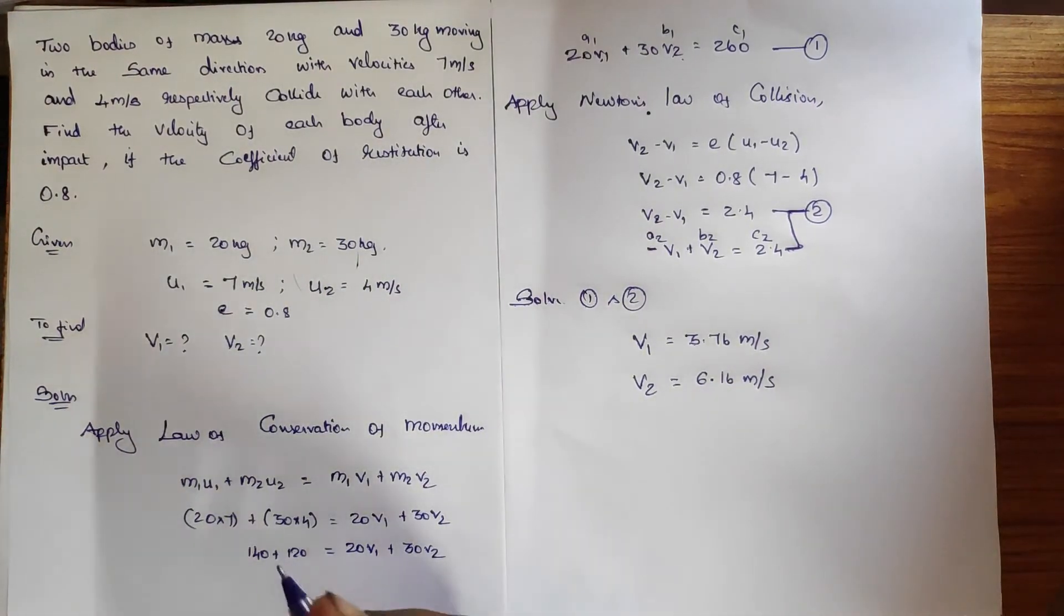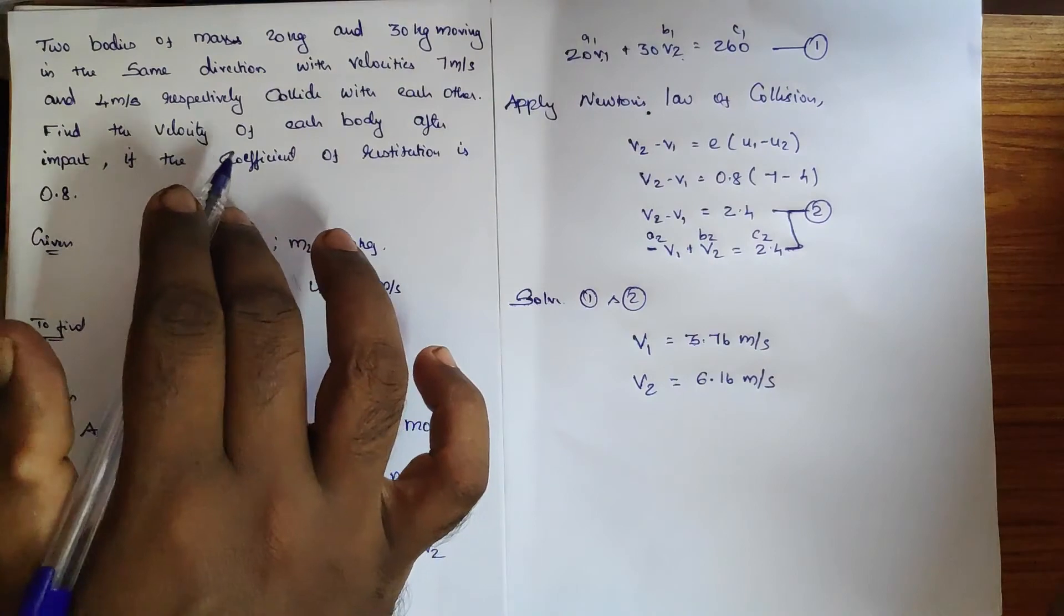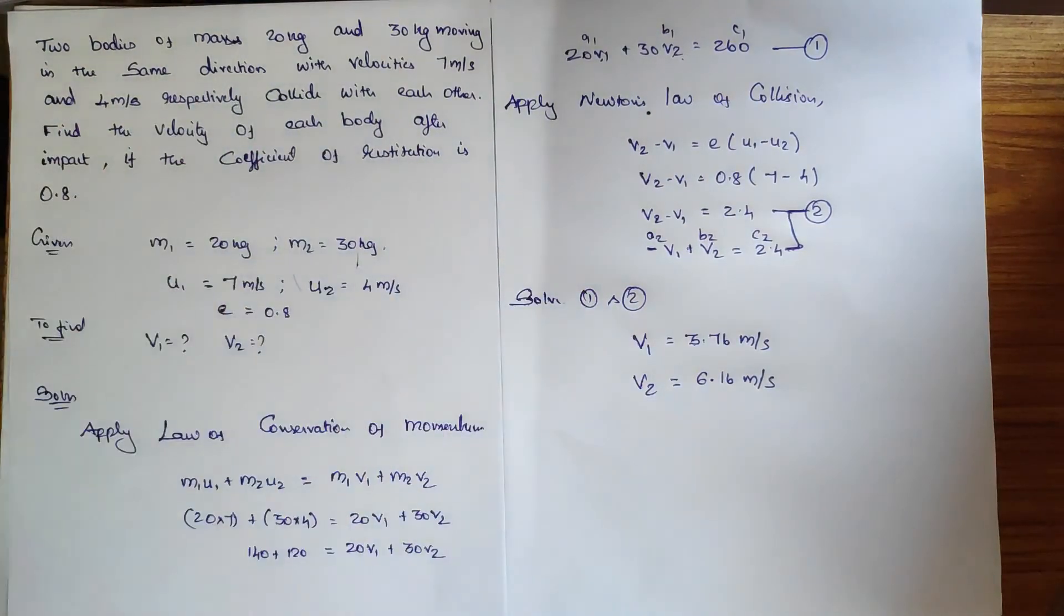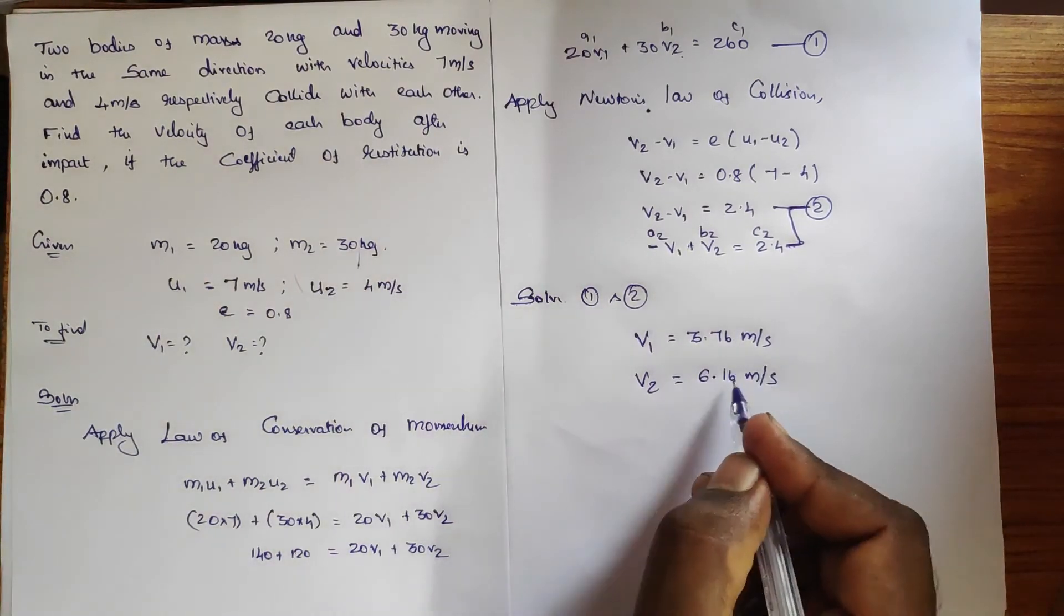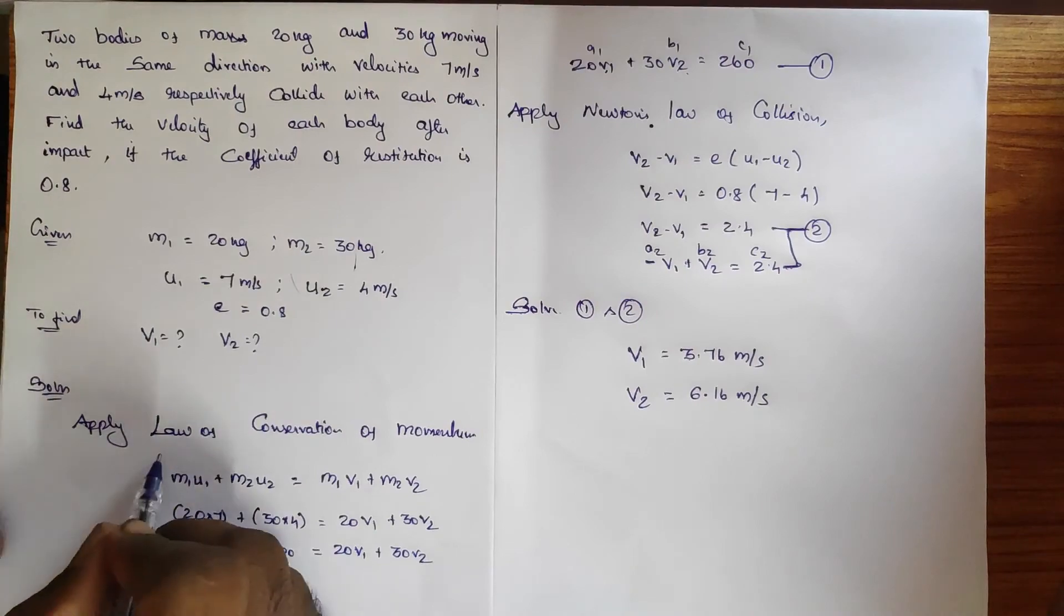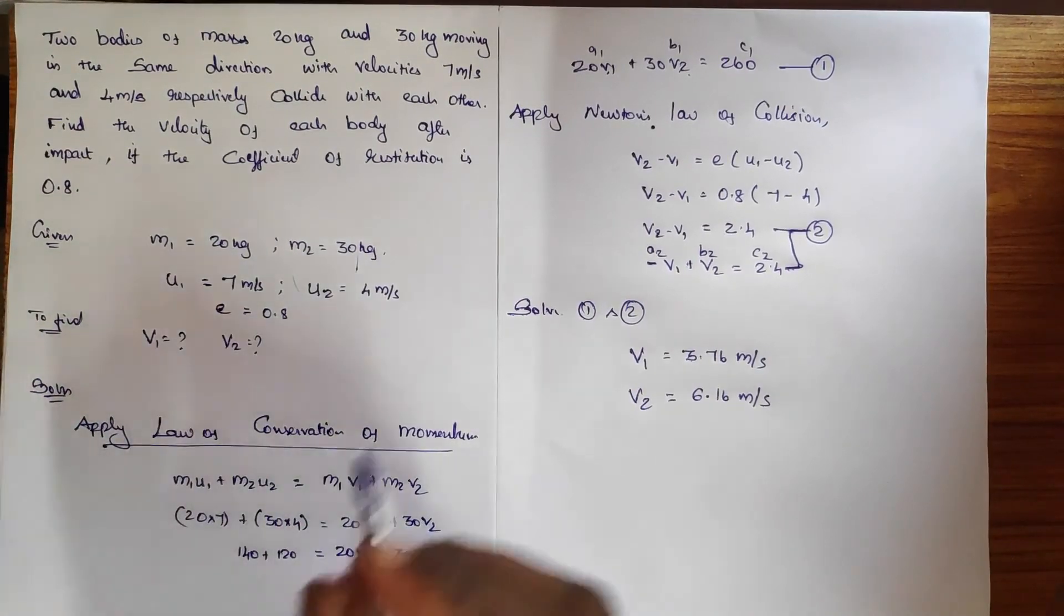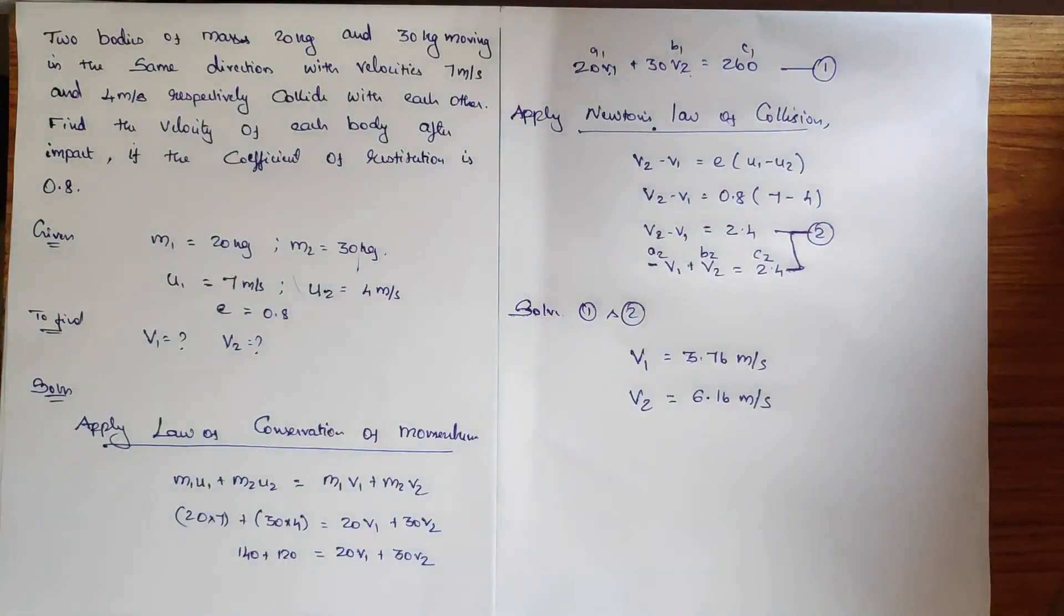So you get v1 = 3.76 meter per second and v2 = 6.16 meter per second. I have identified after collision what is the velocity of each body after the impact. So v1 = 3.76 and v2 = 6.16. By applying the law of conservation of momentum and Newton's law of collision, we can identify the unknown values which are demanded in the question.